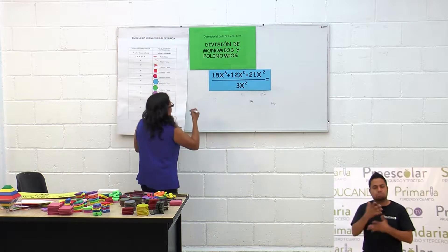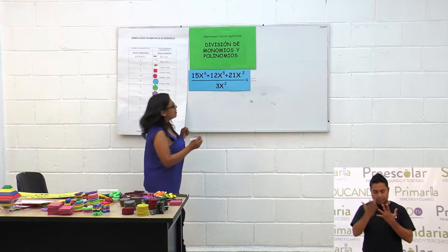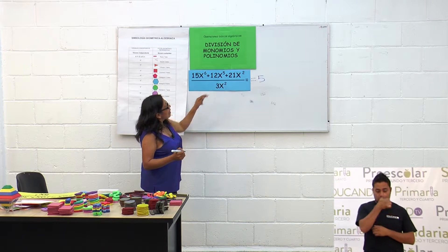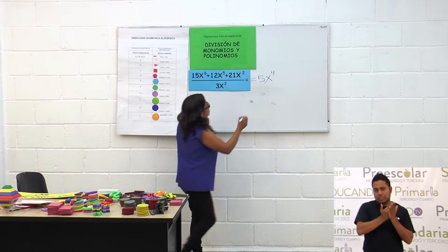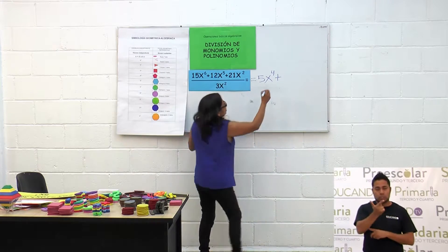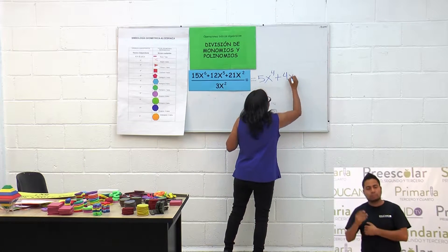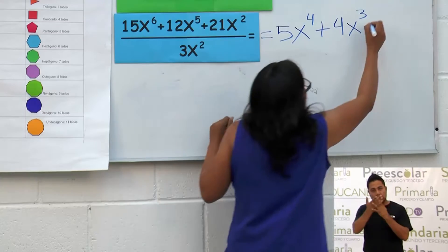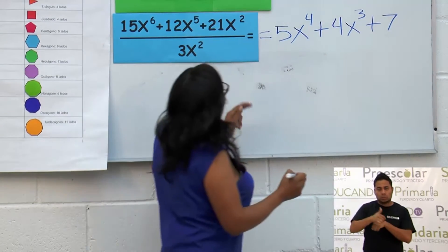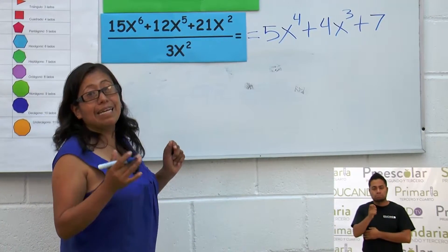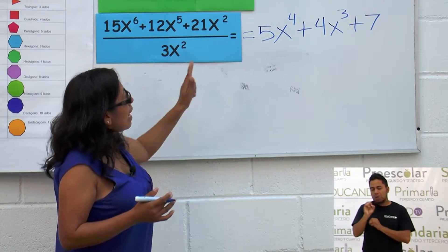Esto es igual a: 15 entre 3 es 5; x sexta entre x cuadrada es x cuarta. Más entre más es más. 12 entre 3 es 4; x quinta entre x cuadrada es x cúbica. 21 entre 3 es 7. X cuadrada entre x cuadrada se elimina porque x a la 2 menos 2 es x a la 0 y ya no se pone. Así quedaría el resultado.